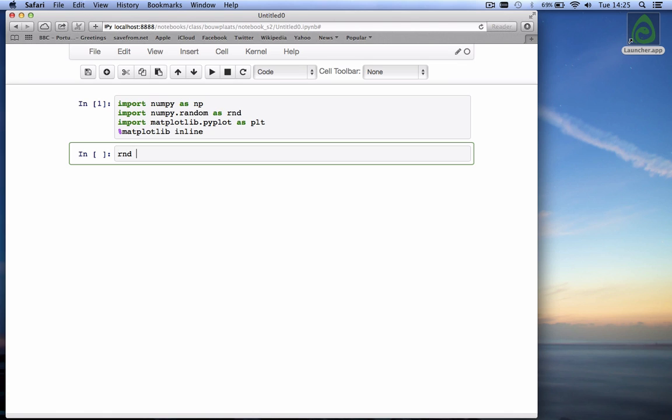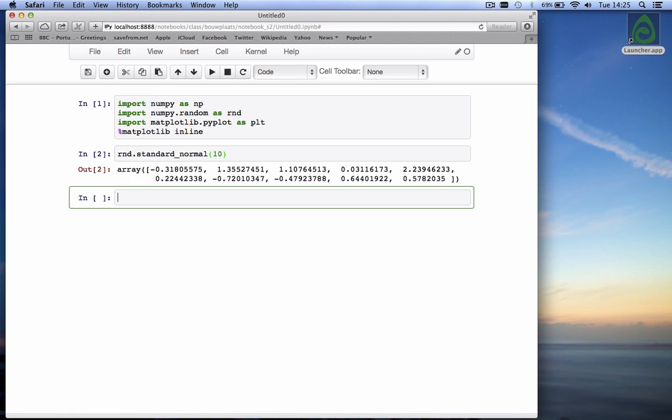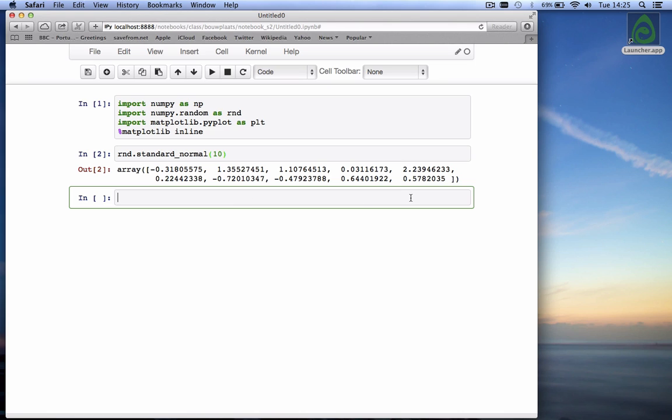And now we can call the function. The function is called standard_normal. When I open the parenthesis, it tells us that you can give it a size. It returns samples from a standard normal distribution which means the mean is equal to zero and the standard deviation is equal to one. So let's draw ten of them.